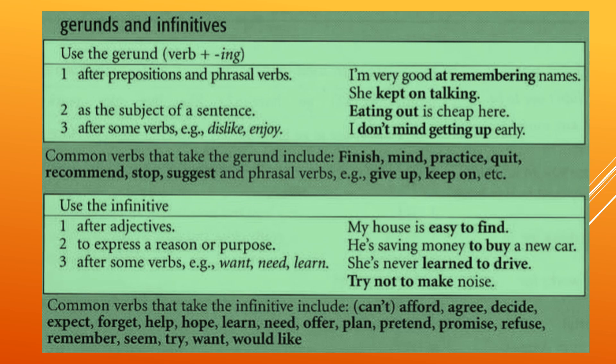Number three: after some verbs. For example: dislike, enjoy, mind. 'I don't enjoy getting up early.' 'I don't mind getting up early.' 'I dislike getting up early.' So for these verbs, we use -ing for the verb which comes after them. And then we use the infinitive.